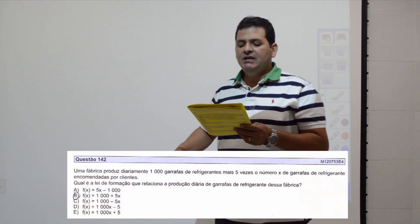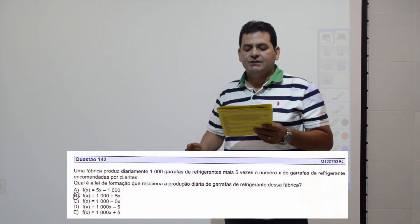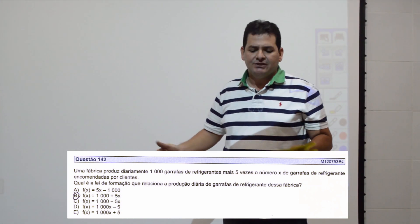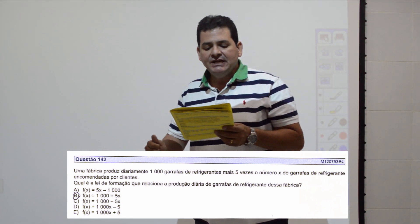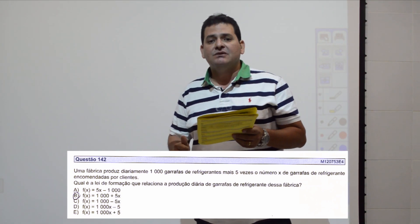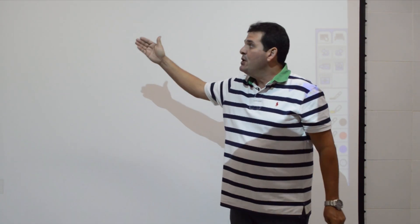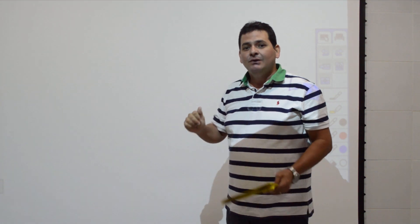Questão 142: uma fábrica produz diariamente mil garrafas de refrigerante mais 5 vezes o número X de garrafas. A lei de formação é: valor fixo de mil (valor diário) mais 5 vezes o número de encomendas, ou seja, mais 5X. A função ficaria F(X) = 1.000 + 5X. Item B.